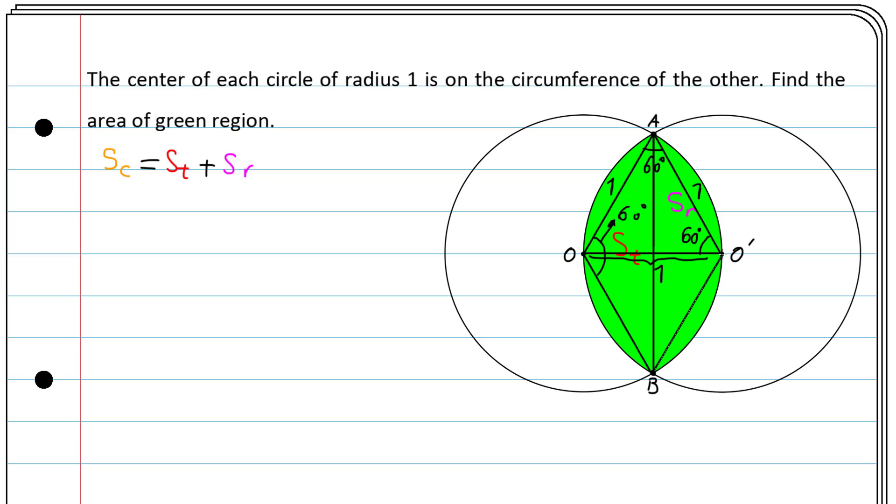Now, by symmetry, the triangle OO'B is also equilateral, and this angle here is 60 degrees too. So the big angle here at O is 120 degrees, which is one-third of the whole circle, which is 360 degrees. So SC equals one-third of π times r squared, which is one-third π.